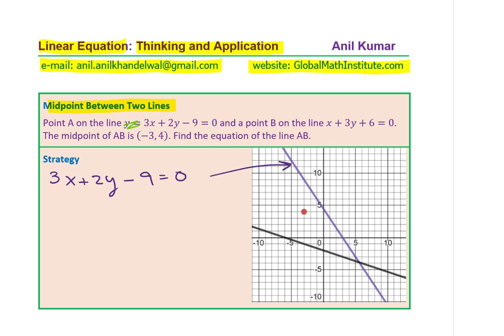The other line which is given to you is x plus 3y plus 6 equals 0. So here's the other line x plus 3y plus 6 equals 0. So this is your second line.